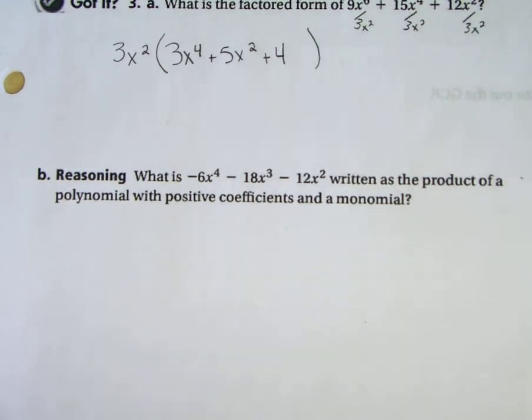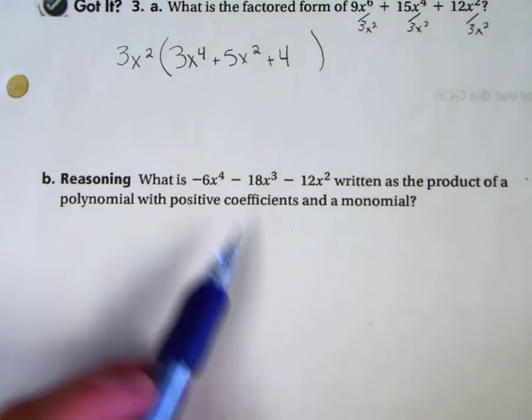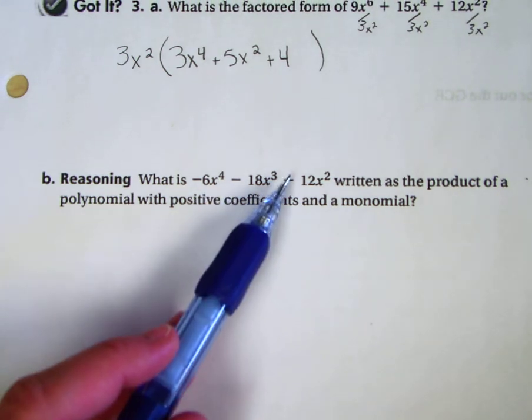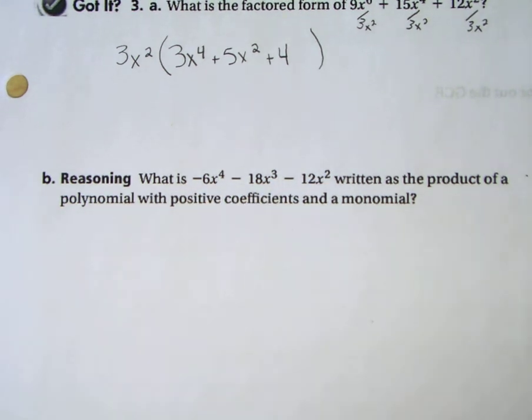Part B. What is -6x^4 - 18x^3 - 12x^2 written as the product of a polynomial with positive coefficients and a monomial? Well, this time we're going to have to look at all of those negative signs.